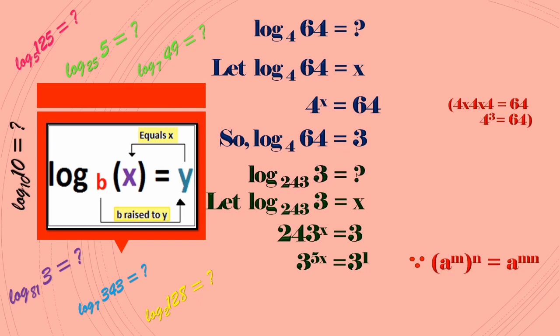Again, by the rules of exponents, if the bases are equal then the exponents are also equal. So 5x = 1, that implies x = 1/5.